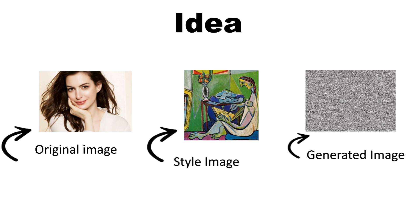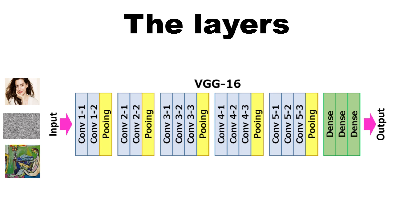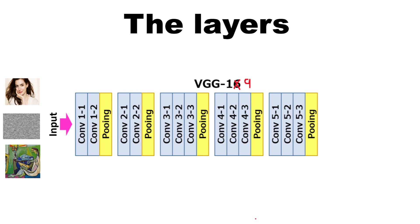How do we make the generated image become a combination of the original and the style image? We're going to take those three image inputs and send them through the VGG network separately — let's just pretend it's VGG19. We're going to remove all of the fully connected dense layers at the end, and then take the output from some specific conv layers. In the paper, they use five conv layers: conv1_1, conv2_1, conv3_1, conv4_1, and conv5_1, where the first number changes after going through a pooling layer. We do that for every one of the three inputs, so we get three times five conv layer outputs, each having a channel, height, and width.